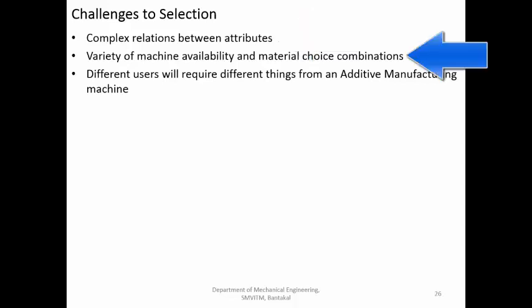Giving ranks or points to individual characteristics is not simple; it is complex, and the bias of the person giving the points comes into picture. The second challenge is the variety of machine availability and material choice combinations. When ranking results in two or more options with almost equal points, it is very difficult to justify selecting one over the other — and without a clear justification, selection often comes down to hunch or luck.